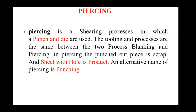The next process is the piercing process. Piercing is a shearing process in which a punch and die are used — the same tooling as before. The sheet metal is kept on the die, and the punch comes from the top and descends. It comes in contact with the sheet metal, pierces it, and a piece of the sheet metal is removed. This removed piece is thrown out as scrap. The leftover — the sheet metal with the hole — is our product.